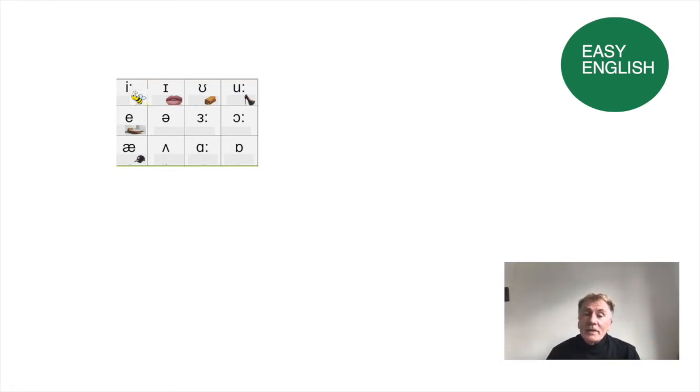The top line, which is E as in bee, I as in lips, U as in wood, and U as in shoe, shows you that the tongue's position is high in the mouth, going from the front of the mouth with E in bee to the back of the mouth as U in shoe where you have more rounded lips.